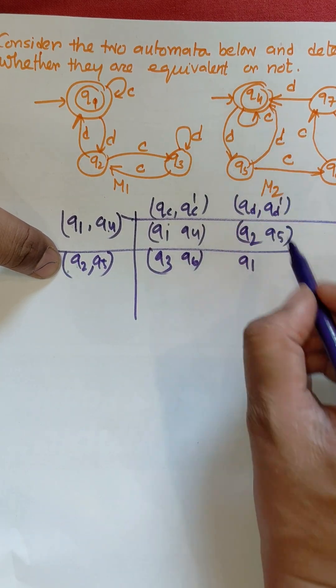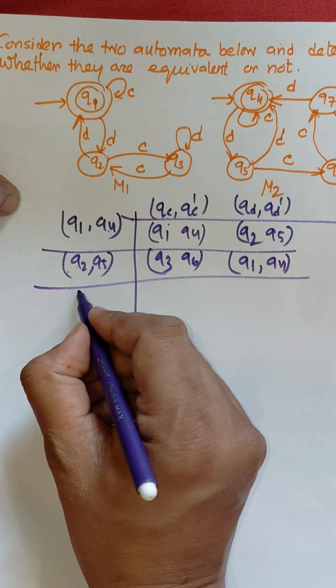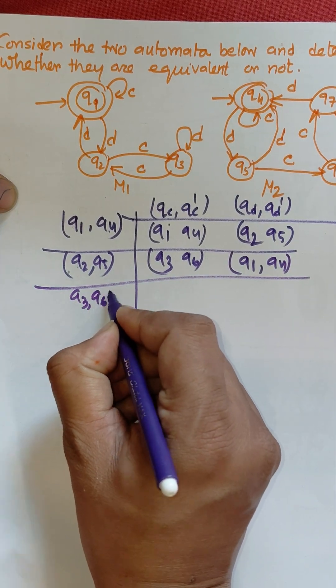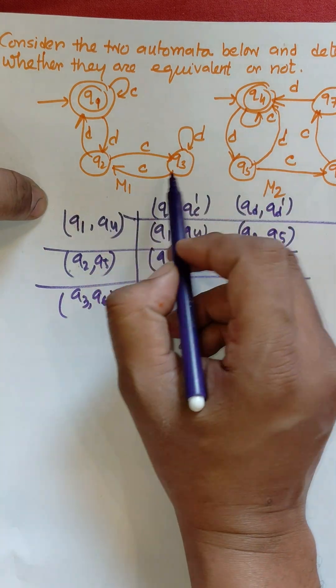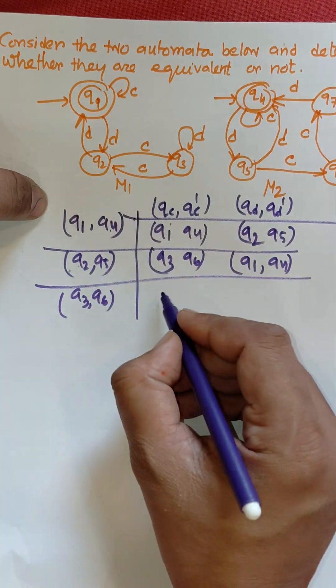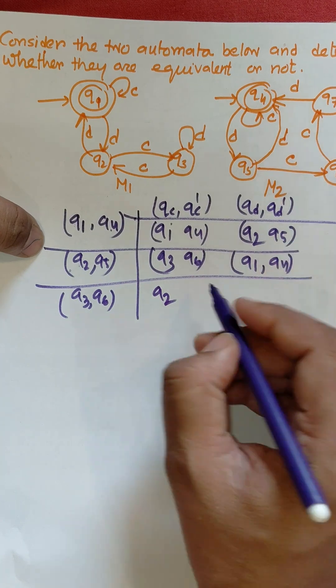Here the new state is q3, q6. For q3 to c, output is q2. For q6 to c, output is q7. Both are non-final, so there is no problem.